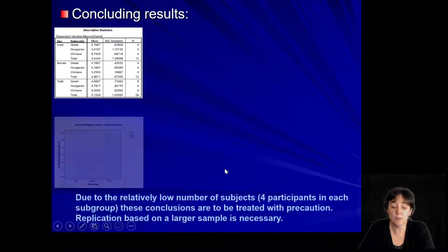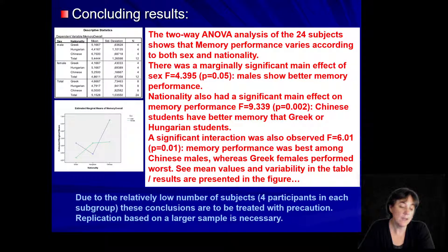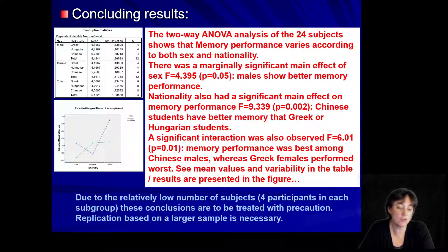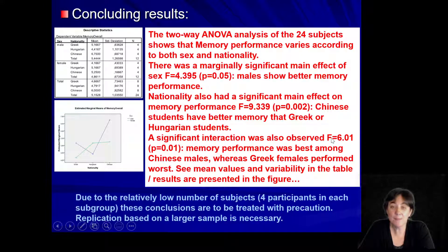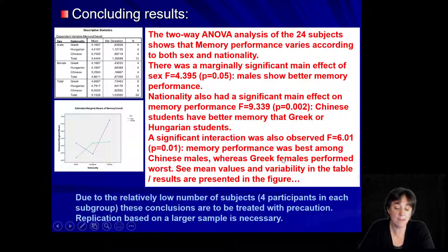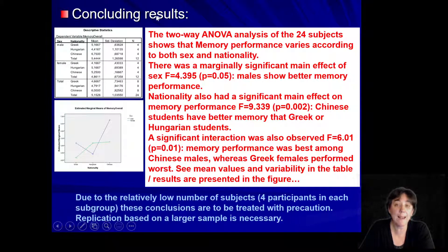This is what we would conclude in our final conclusion. In ANOVA you can highlight different aspects of what you see on the graph — the bottom line is it should be true. We tested 24 subjects with a two-way between-subjects ANOVA and found a marginally significant main effect of sex with males being better, a significant main effect of nationality with Chinese being the best, and a significant interaction between nationality and sex — with Chinese males being the best and Greek females the worst in this memory task.